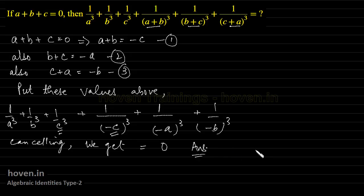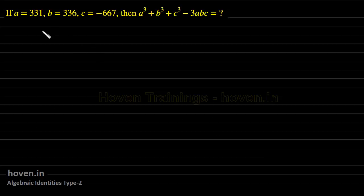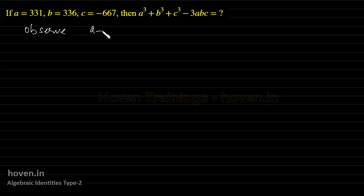Let us take our next example. If a is 331, b is 336, c is minus 667, then what is a cube plus b cube plus c cube minus 3abc? This is very similar to our first example. We observe that a plus b plus c equals 331 plus 336 minus 667 equals 0.